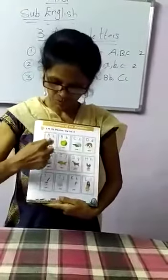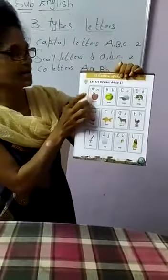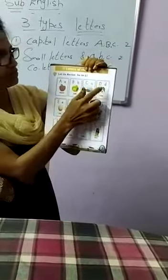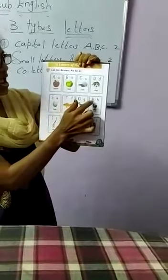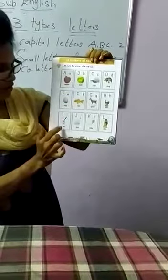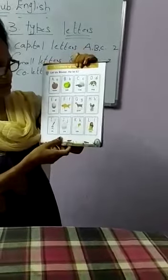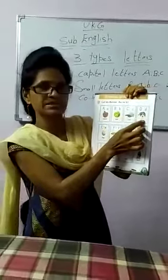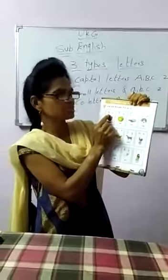Whenever you are saying these letters, put your finger on the object and keep on repeating along with the object: A for apple, B for ball, C for cap, D for dog, E for egg, F for fish, G for goat, H for hen, I for ink, J for jet, K for kite, and L for lion. Make sure you put your finger on the object and whichever letter you are saying, put your finger on it and keep saying.